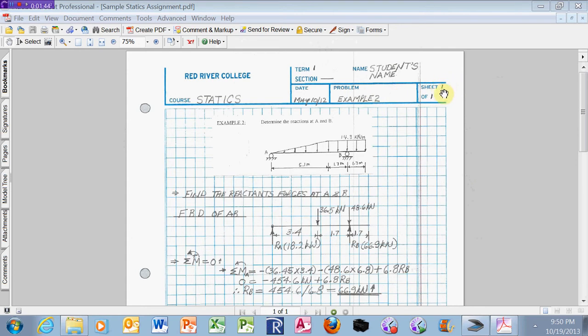It is 1 of 1. It could be 1 of 2, 1 of 3, or 2 of 3—any of those—but you have to fill out the entire header of the assignment.